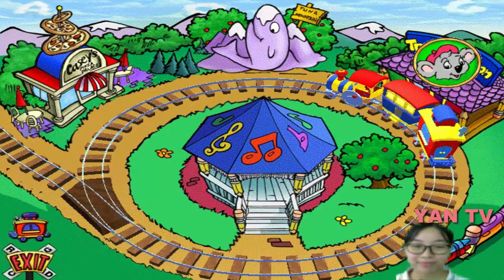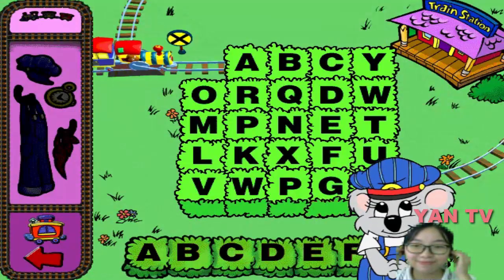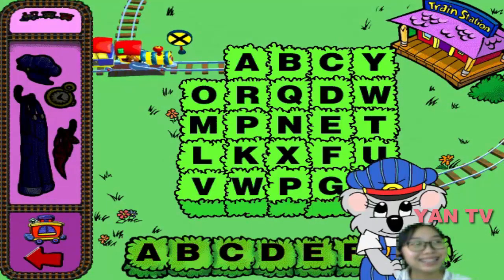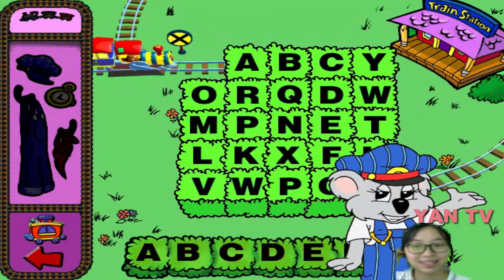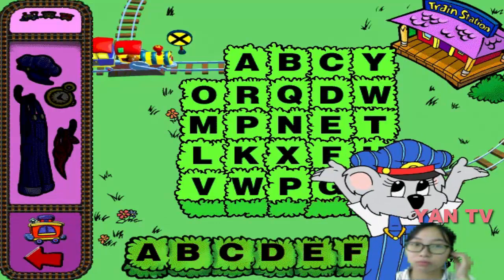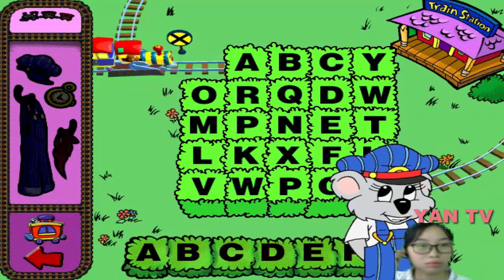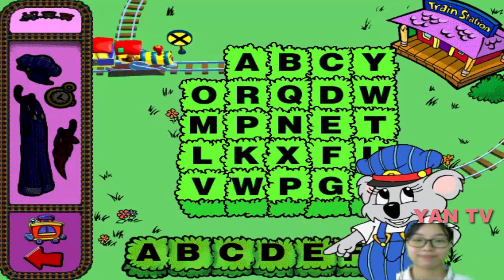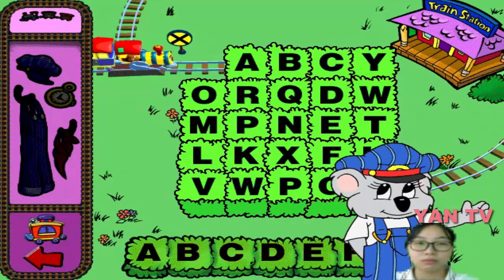Keisha Koala sure could use your help at the JumpStart Train Station. All aboard! Hey, it's Keisha Koala! Oh hi Eleanor, it's hard for me to hear you with all that noise. If your friend there can help me get these letters out of the way, engineer Frankie will drive the train off and then we can talk.